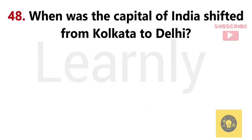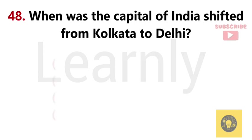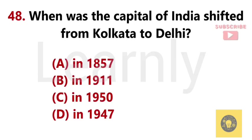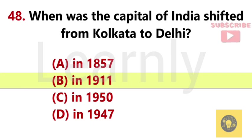When was the capital of India shifted from Kolkata to Delhi? Answer B. In 1911.